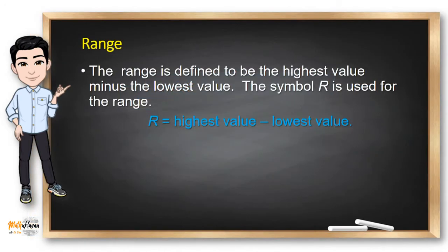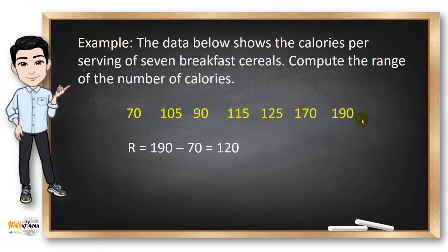One simple measure of variation is the range, the difference between the largest and smallest values. The symbol R is used for the range. For example, the data below shows the calories per serving of seven breakfast cereals. Compute the range of the number of calories.